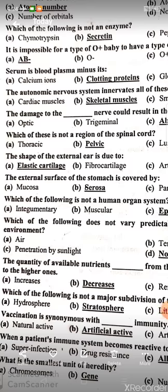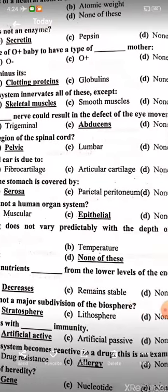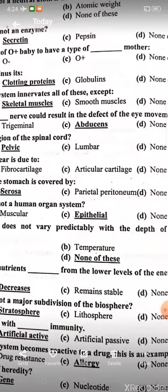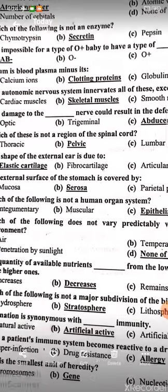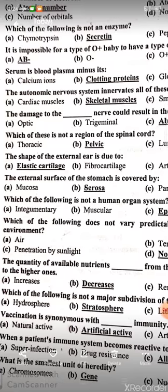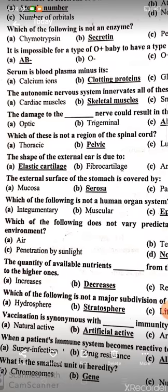Damage to the abducens nerve could result in a defect of eye movement. Which of these is not a region of the spinal cord? Pelvic. The shape of the external ear is due to elastic cartilage.